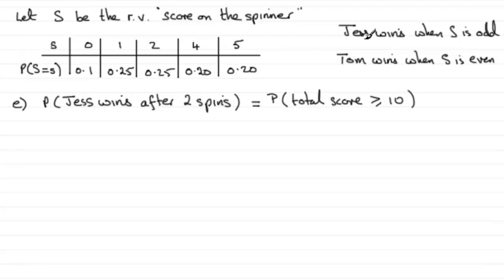And for Jess to win, the numbers have to be odd. It must mean that the only way you're going to get 10 - you can't get more than 10 anyway with odd numbers in two goes.